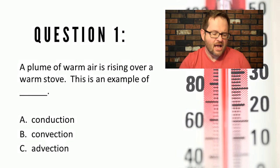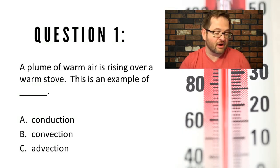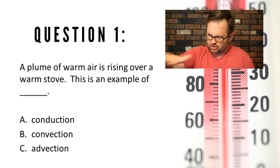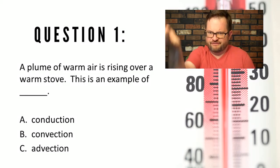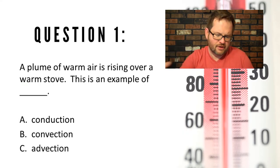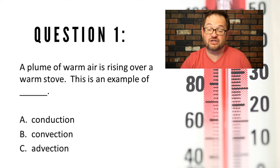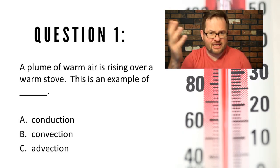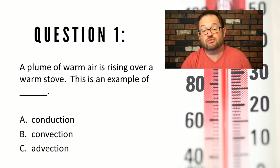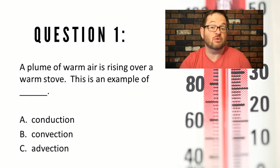Question one: a plume of warm air is rising over a warm stove. You've got your hand up over the stove and you can actually feel warm air rising off the stove. Is this an example of A) conduction, B) convection, or C) advection? Make a choice for one of those three options and get some feedback before you move on to question two.